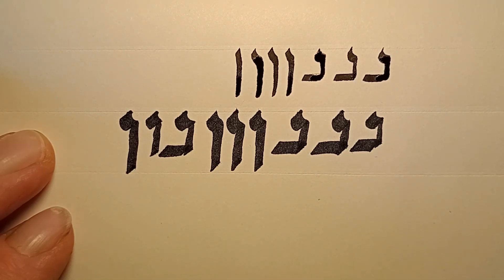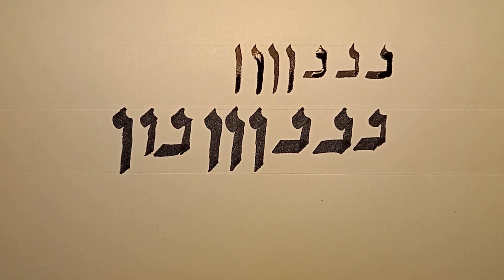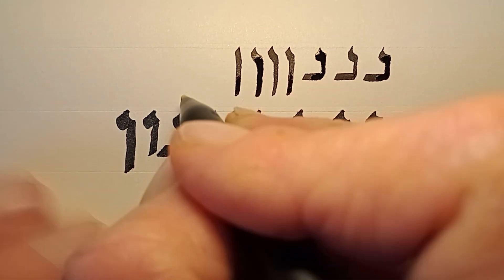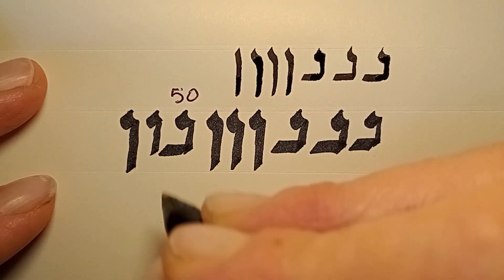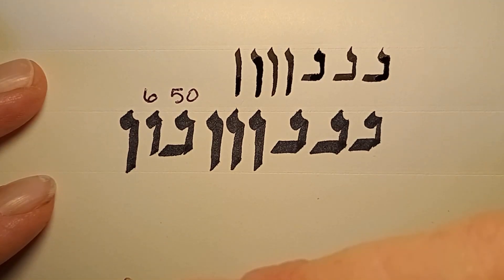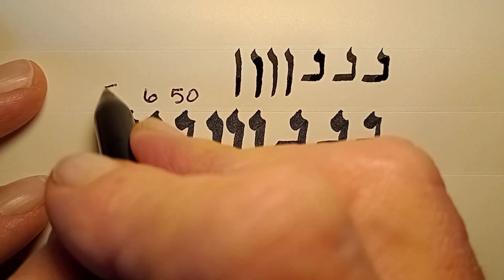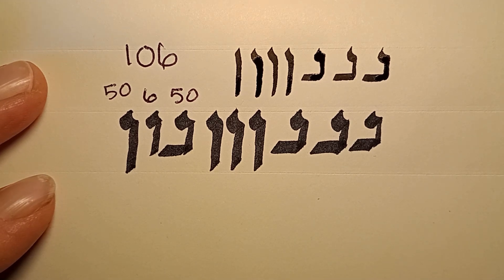And that's how we spell the letter nun in a word. Let's grab the gematria from this. We have nun at a value of 50, vav at a value of 6, and nun sofit with a value of 50, for a total of 106.